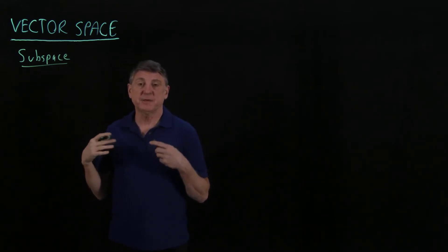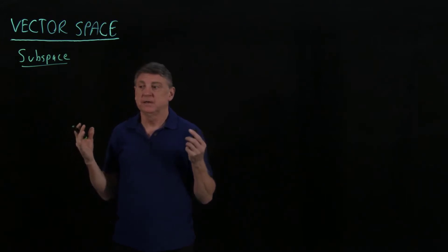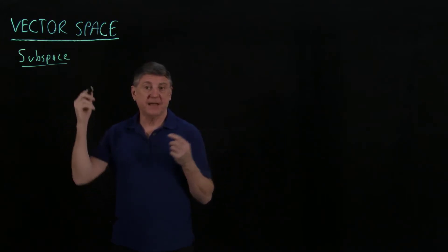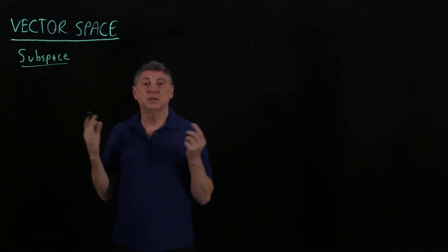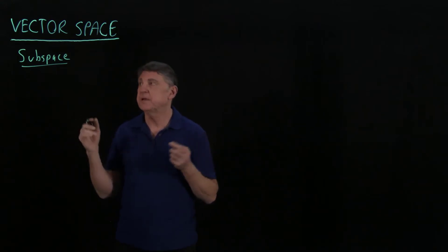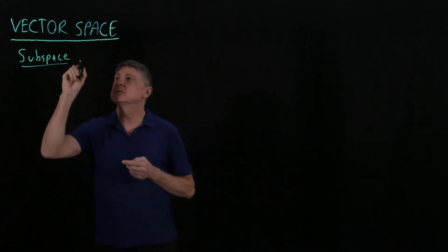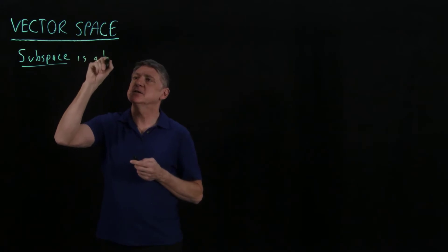Because if a vector space is all of the vectors that have m real entries, that's the coordinate space or the real space, and a subspace is a linear subset.